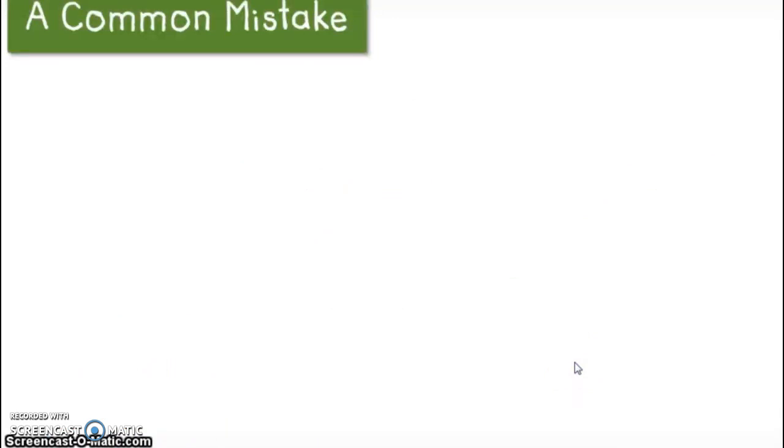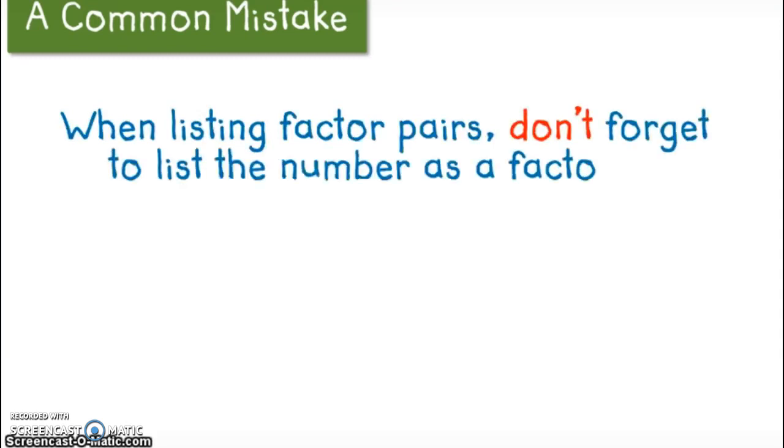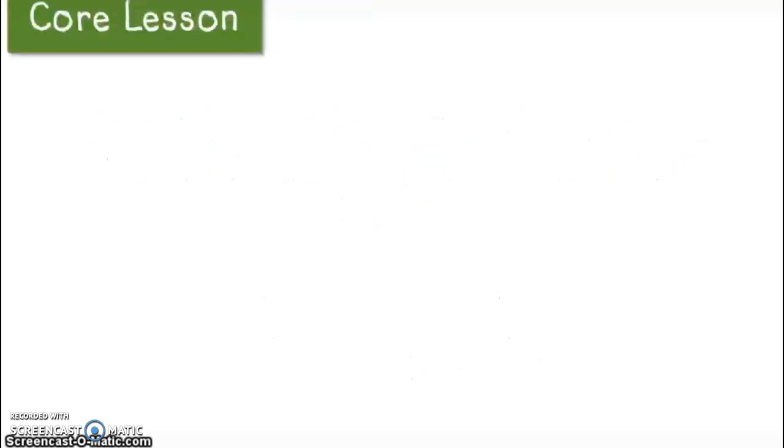And then a common mistake with factors is when listing factor pairs, don't forget to list the numbers, the number as a factor of itself. So with six, a lot of people forget that one and six are factors of the number. Sometimes they forget that. So that's a common mistake. And that's actually the easiest one, just six in the number.